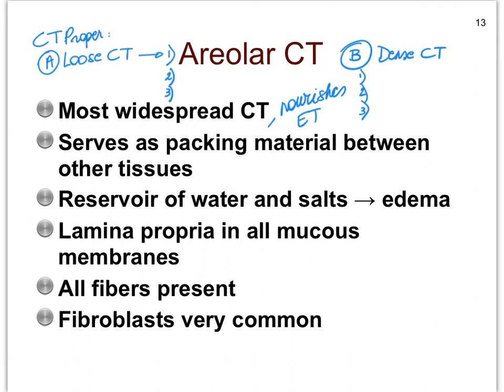This tissue is rich in fibers — it has all the different fiber types. There's plenty of space for vascularization, so it is very vascularized. And because there are many fibers, fibroblast cells are the most common cell type.